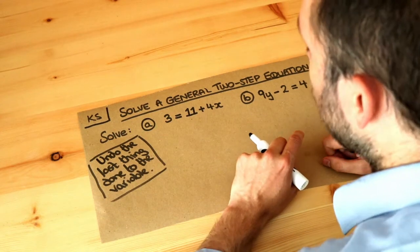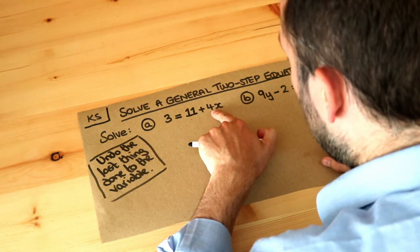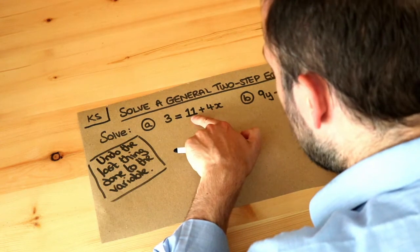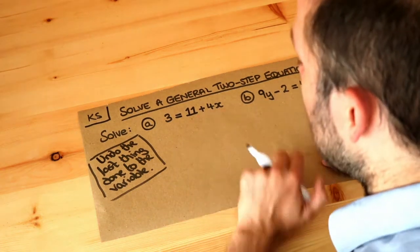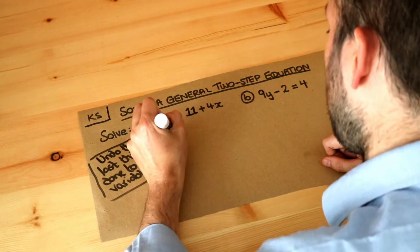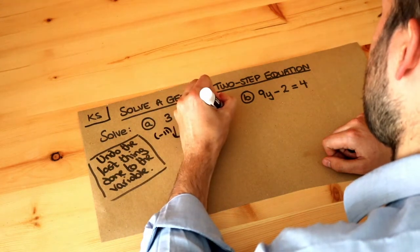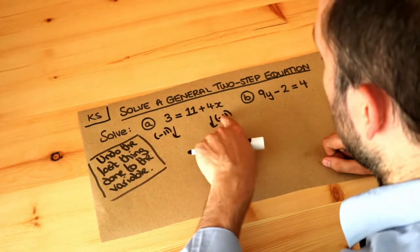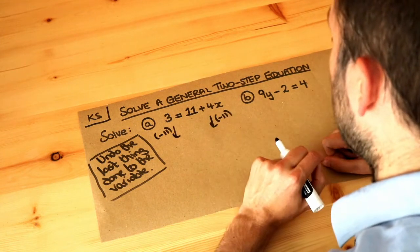So let's think of the story of what's happening to x. Well, x is being multiplied by 4 and then we added 11 to it. The last thing we did was add 11 and we want to undo the last thing done to the variable, so we do the opposite of adding 11 which is to subtract 11 from both sides. I like to put what I'm doing to each side of the equation in brackets and put that on the arrows, but you don't have to do it that way.